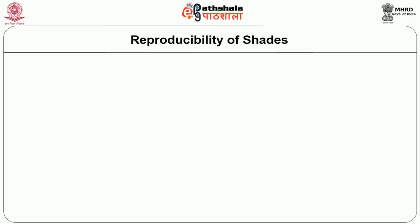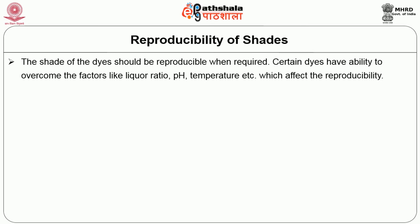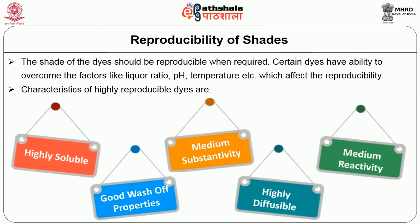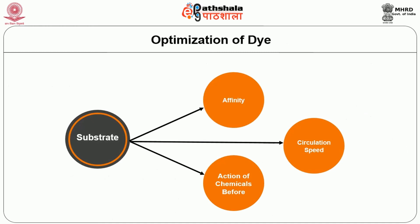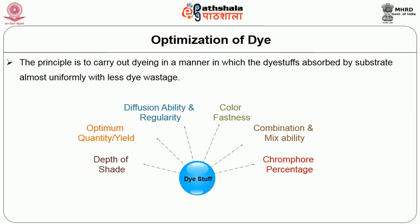Reproducibility of sets of dyes and pigments. The sets of dyes should be reproducible when required. Certain dyes have the ability to overcome factors like liquor ratio, pH, and temperature, which affect reproducibility. Characteristics of highly reproducible dyes are: highly soluble, medium substantivity, medium reactivity, good washing properties, and highly dispersible. To optimize dyes with respect to factors involved in the dyeing process, one must consider: substrate of the textile material, affinity with respect to the dye and fiber, circulation speed of the machines, action of auxiliaries before dyeing, types of dye, depth of shade in the prescribed material, optimum quantity yield with respect to the dye, diffusion ability and regularity of dyes, color fastness of the dyed material, combination and mixability of dyes, chromophore percentage and auxochrome percentage involved in the chemical nature of the dyes, and temperature regulations.